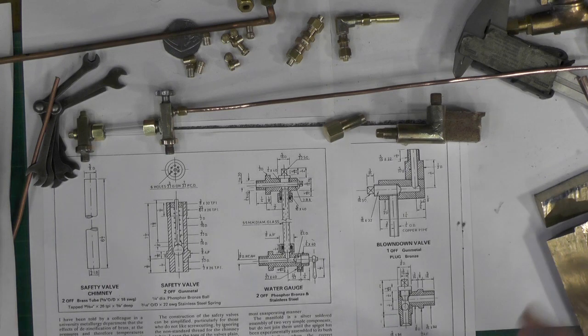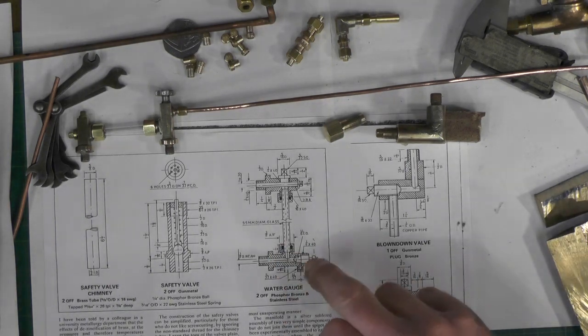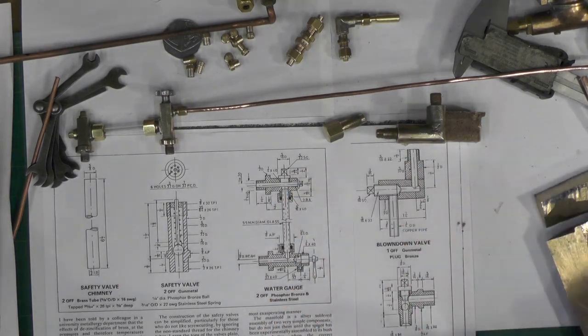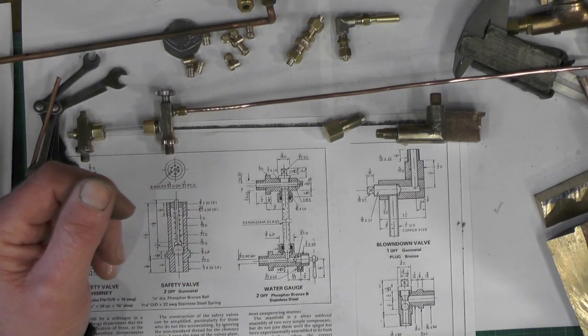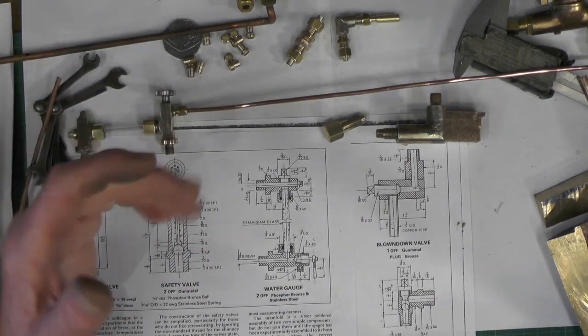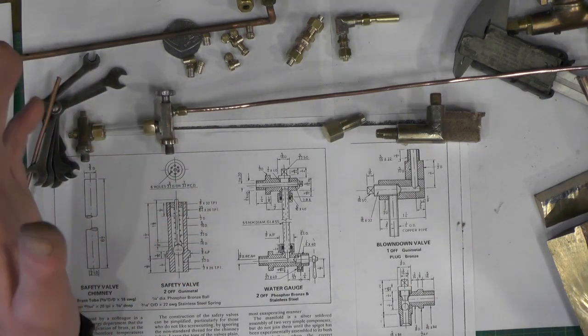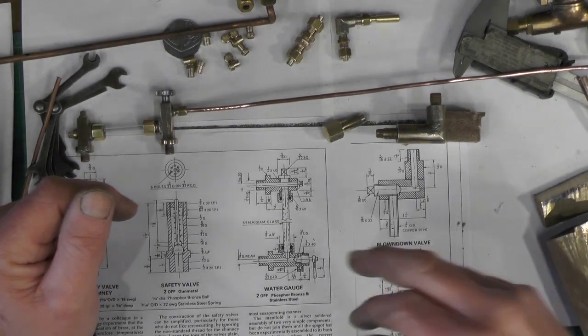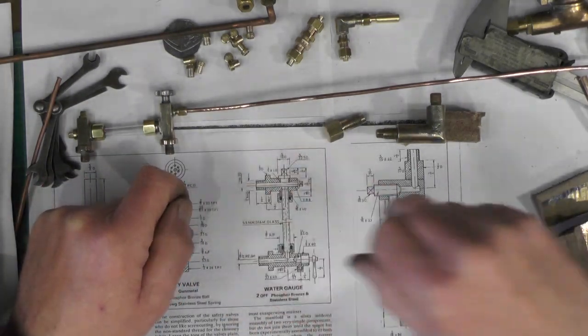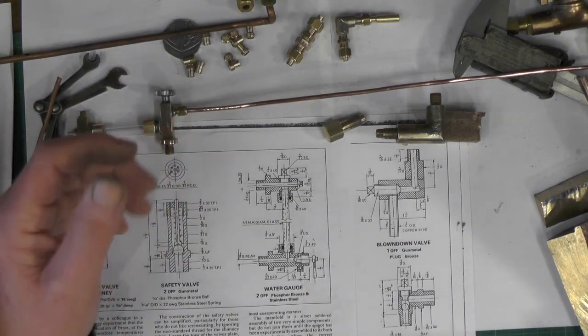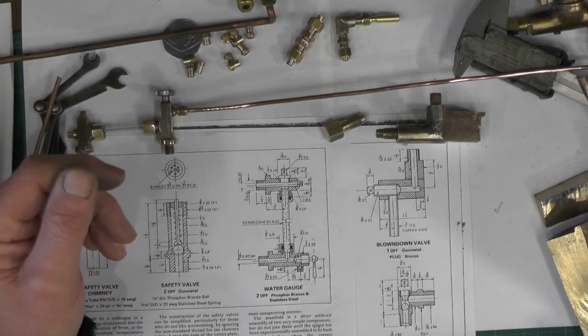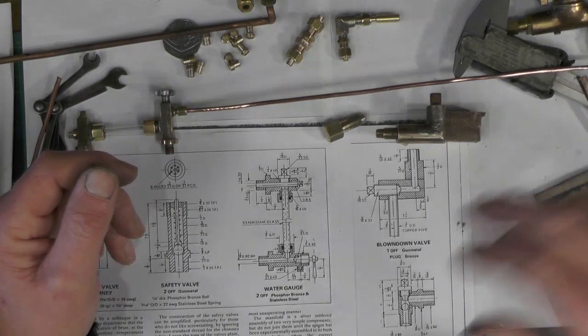It's the water gauges and the blow down valve. Now in Jack Buckler's book which I'm working to, I've not got the drawings. I'm just working from the book. There's no actual drawing for the water gauges and the blow down valve. It mentions them but it doesn't actually, well it doesn't in my edition of the book anyway.